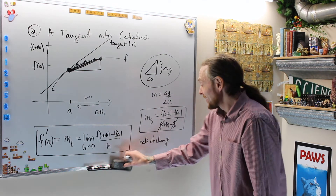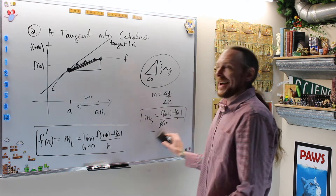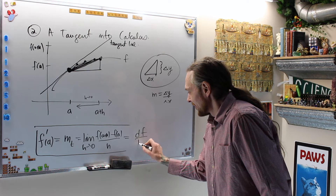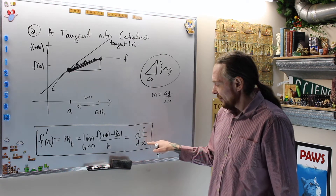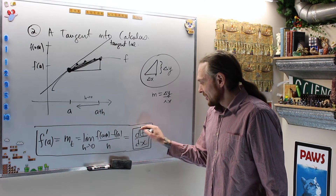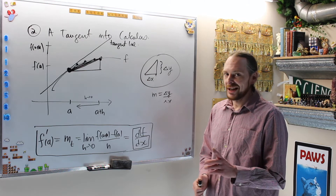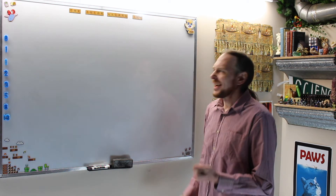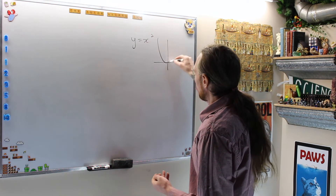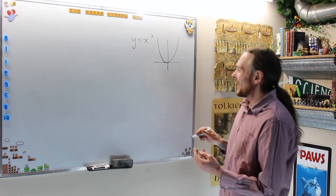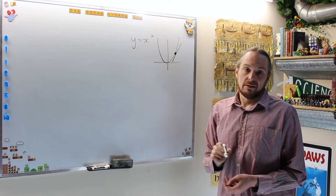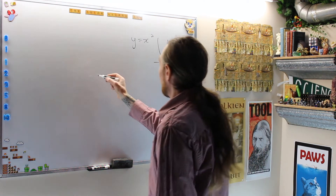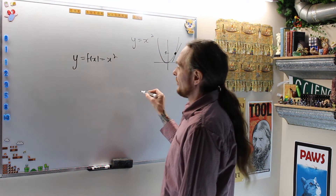In Leibniz notation — and I actually prefer Leibniz — we write dF/dx: the derivative of F with respect to x. It's not a fraction; it's a linear operator applied to a function. Let's apply this to a specific example: y equals x squared, a parabola. Let's use Newton's definition to calculate the derivative at x equals 1.